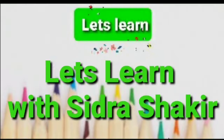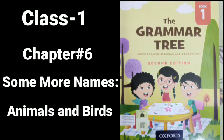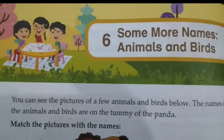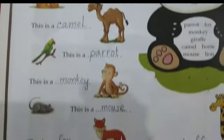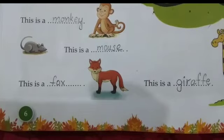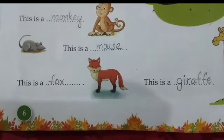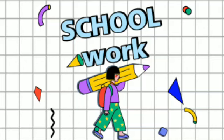Assalamu Alaikum, welcome to my channel. Let's learn with Sidra Shakir. I am back with a new lesson for class one from the book The Grammar Tree, second edition. This is chapter number six: Some More Names — Animals and Birds. The page number is also six. Let's start.